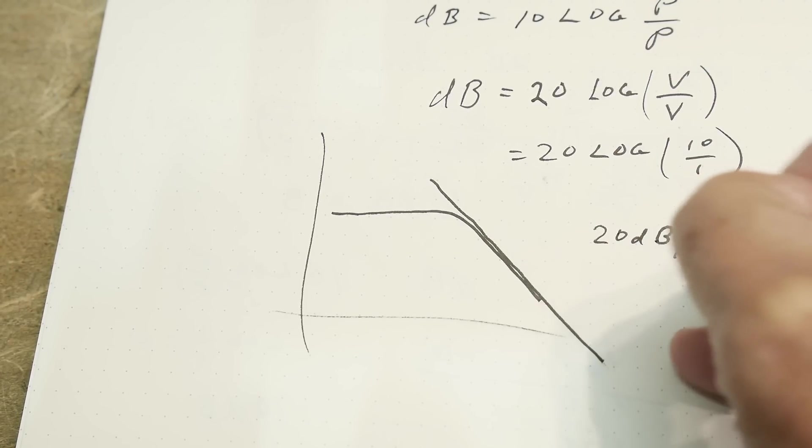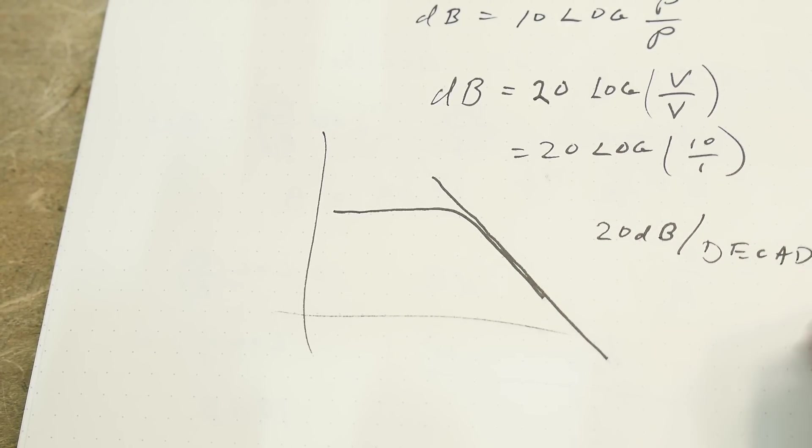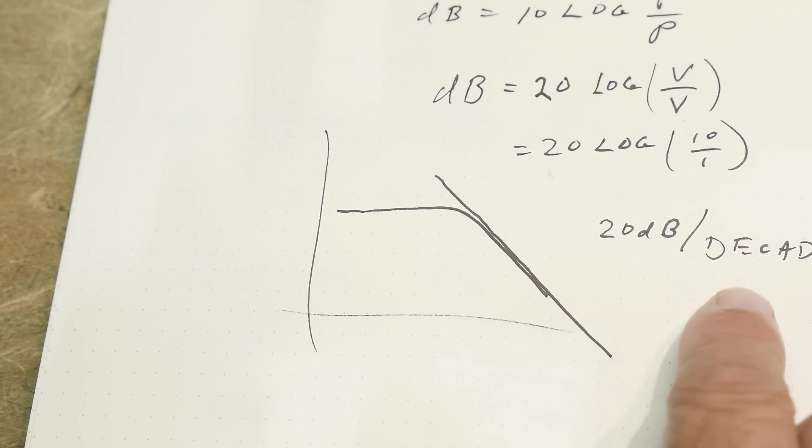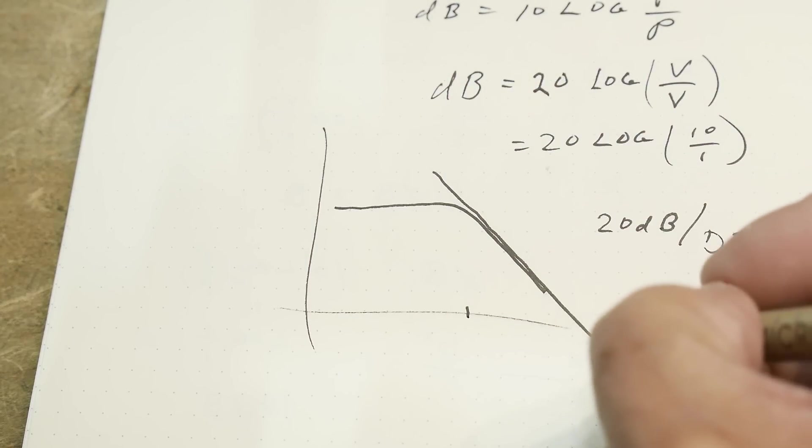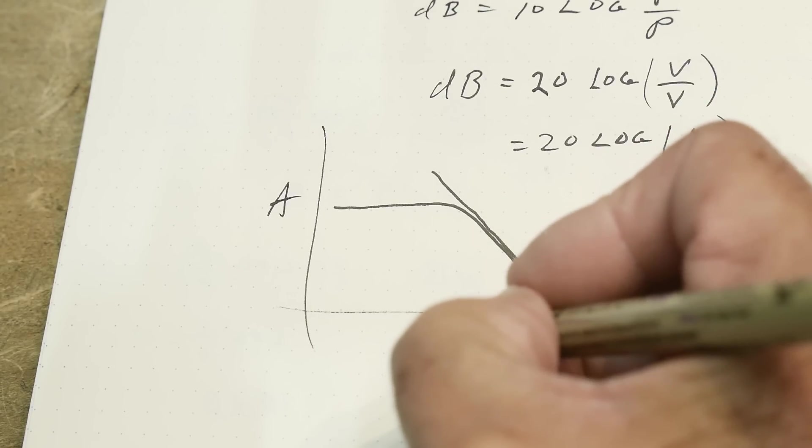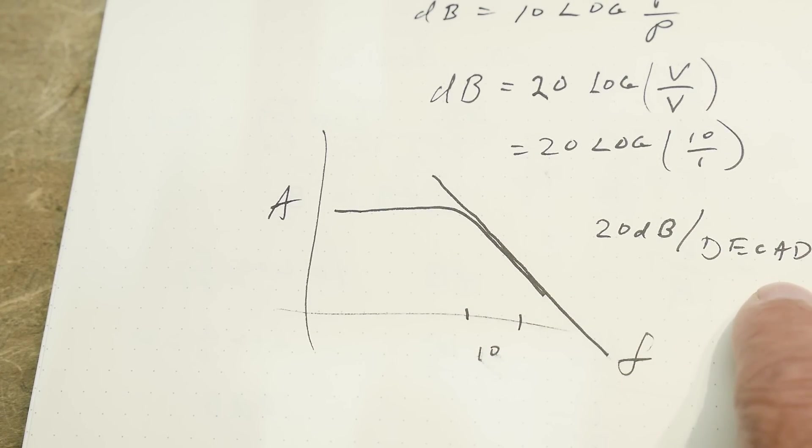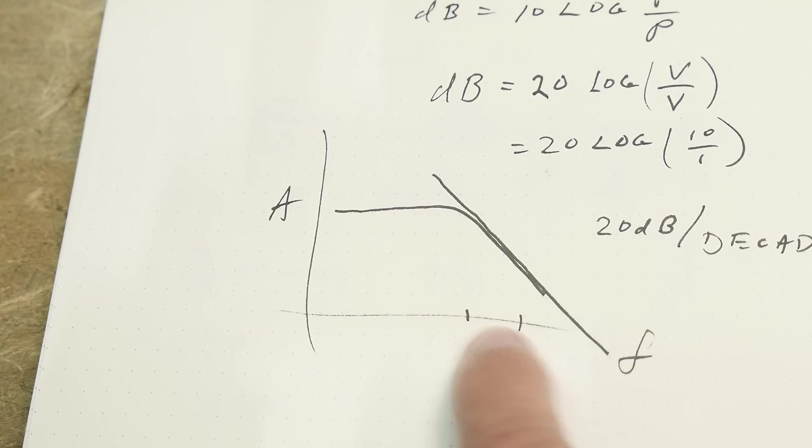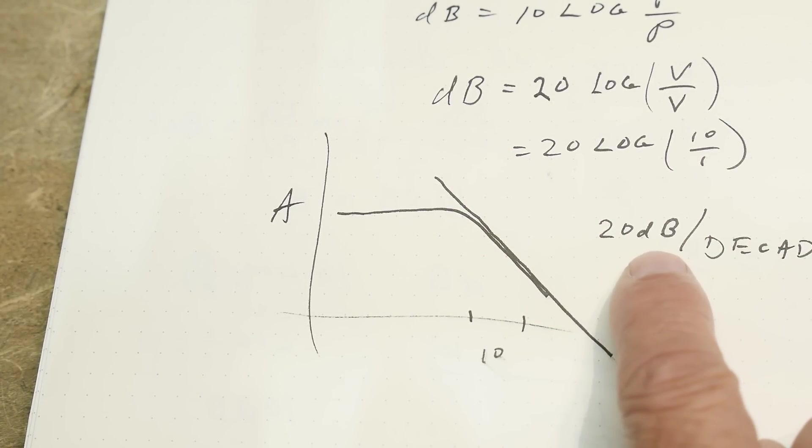So 20 dB per decade. What is a decade? A decade is when, so this is frequency and this is amplitude, when the frequency changes by a value of 10, that's a decade.